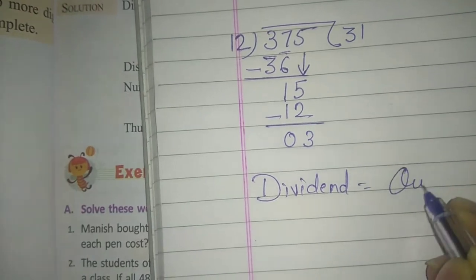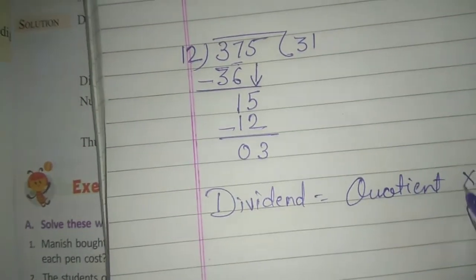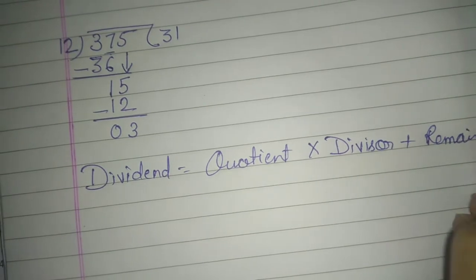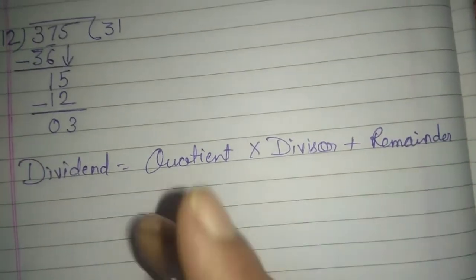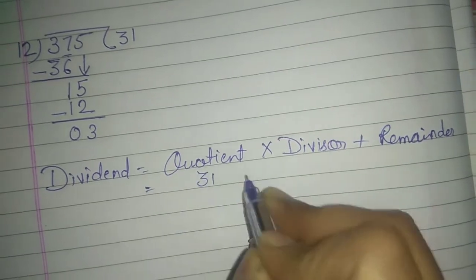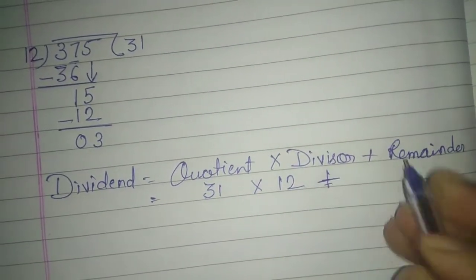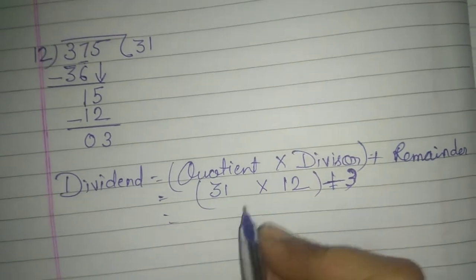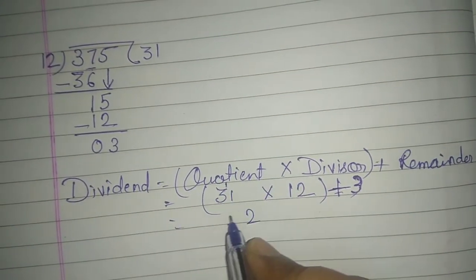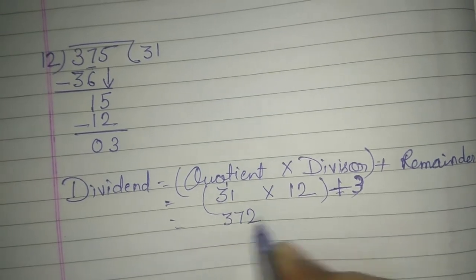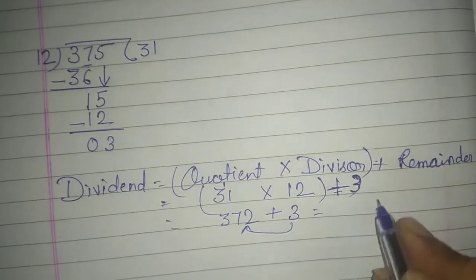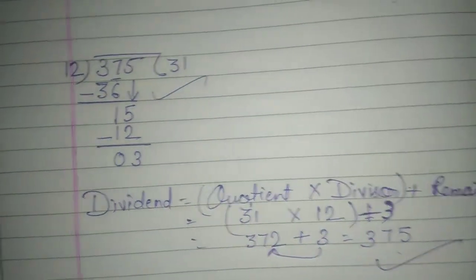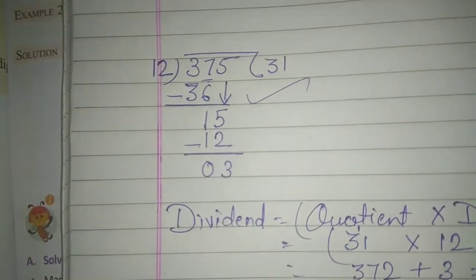Then bring down 5. 15 divided by 12 is 1, remainder 3. Now check: Dividend equals Quotient multiply by Divisor plus Remainder. Quotient is 31, divisor is 12, remainder is 3. 31 times 12 is 372, add 3 equals 375. Your answer is right. Do exercise nine in your notebook, thank you.